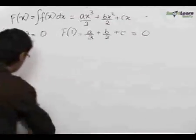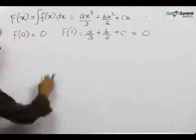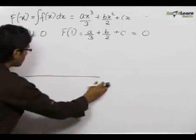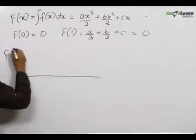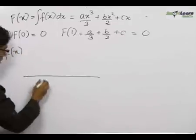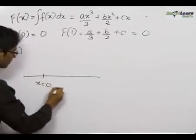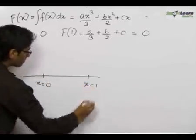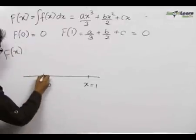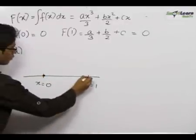Now we know that by Rolle's theorem, if there is a function F(x), there is a point x equals 0, there is a point x equals 1, and if the value of F of 0 is equal to F of 1.